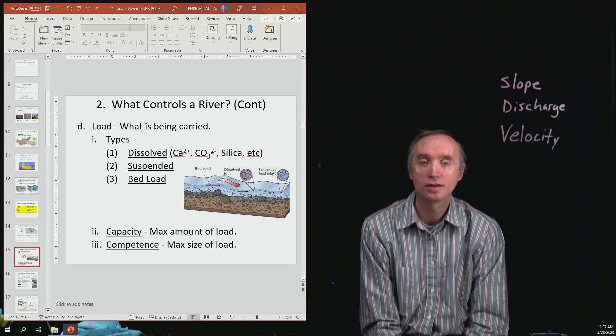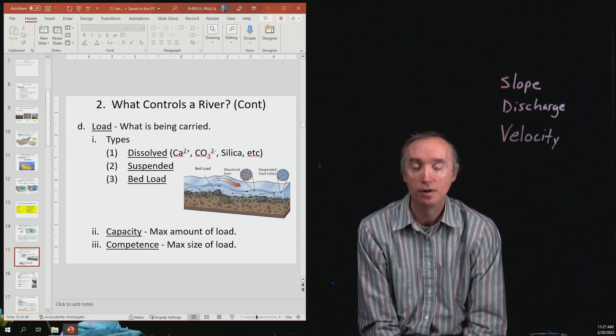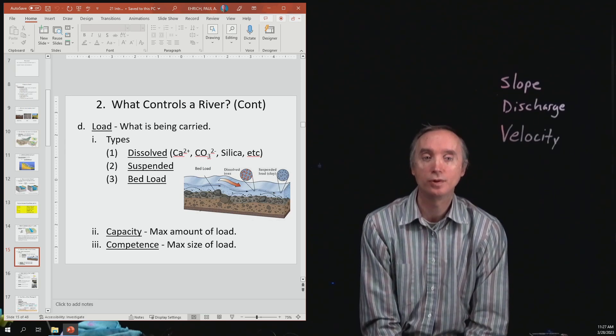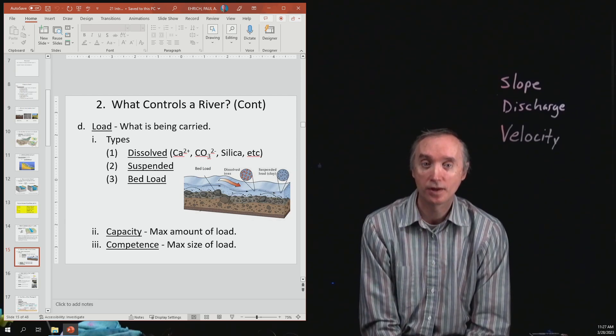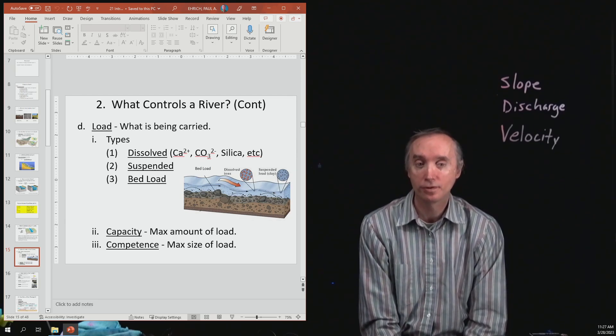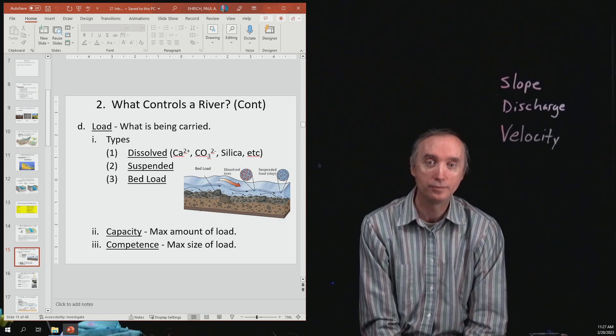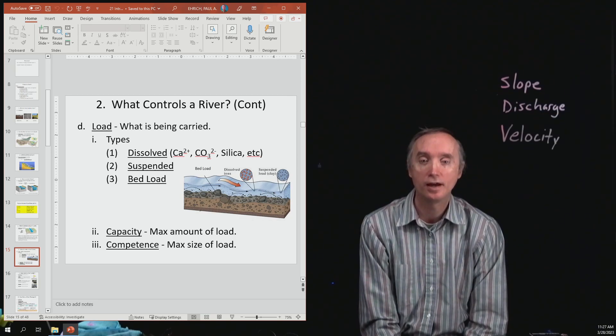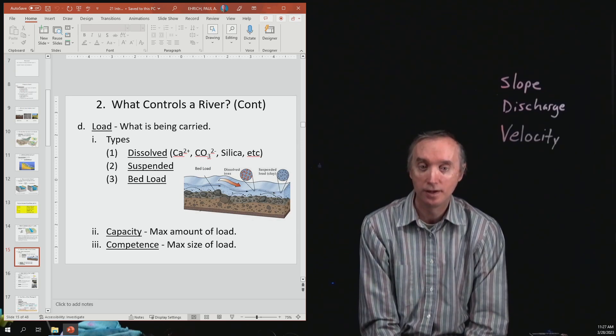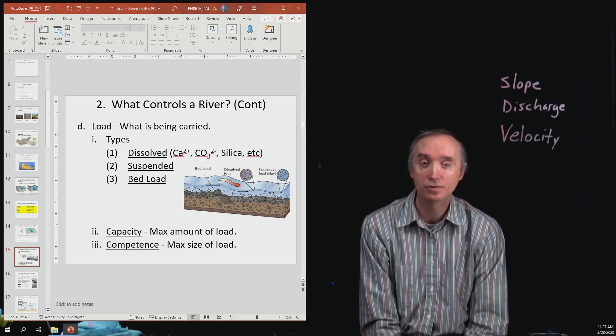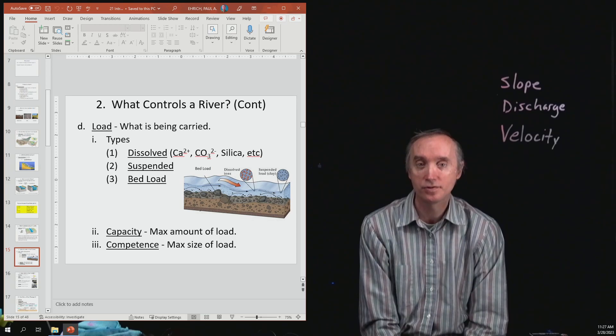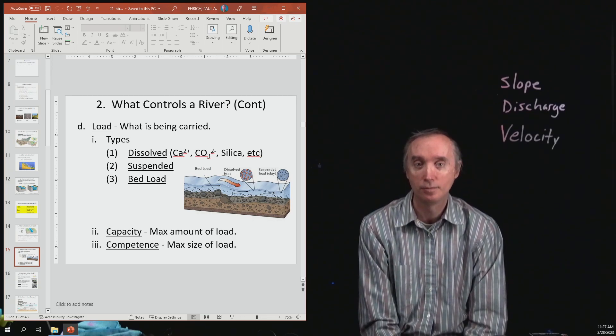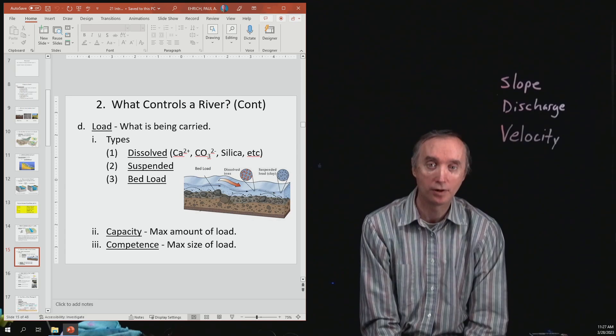What are some things that could be dissolved in water? Well, one of the things is we know from a previous lesson that limestone is made of the mineral calcium carbonate. So what's going to happen is if you have acidic water that gets into limestone, it's going to dissolve the calcium carbonate into the calcium part and then the carbonate part.